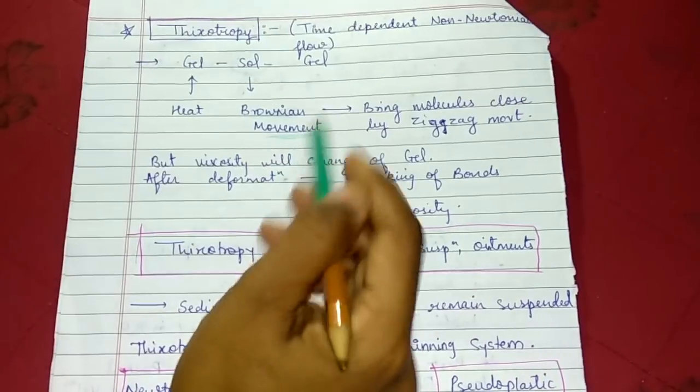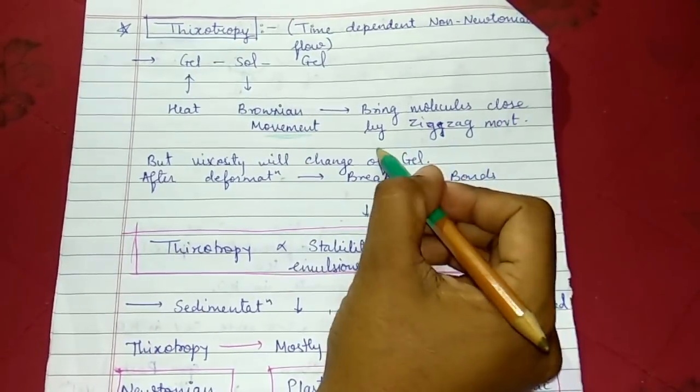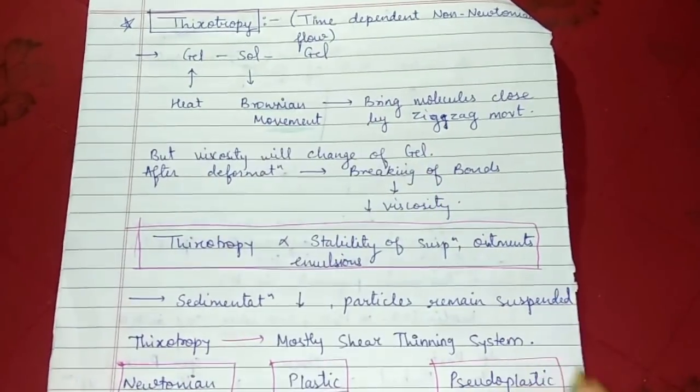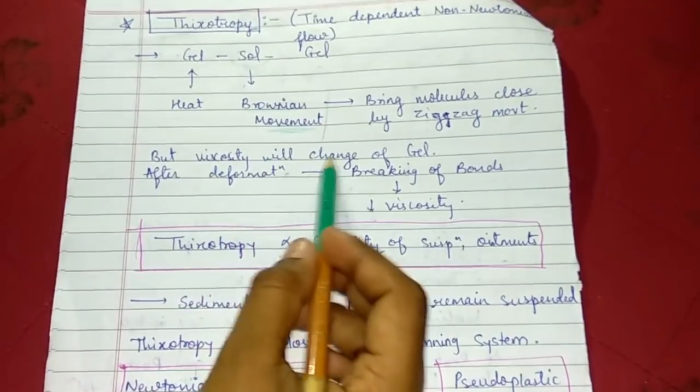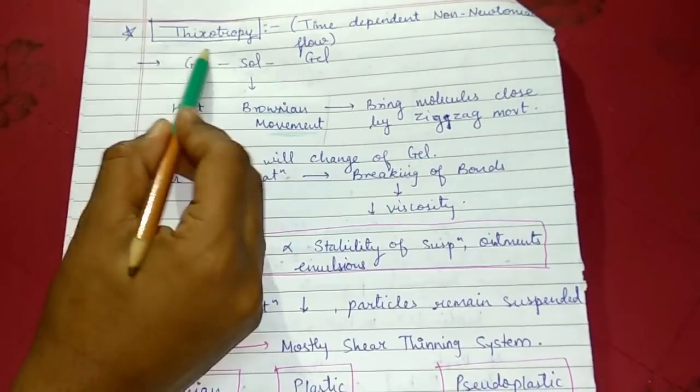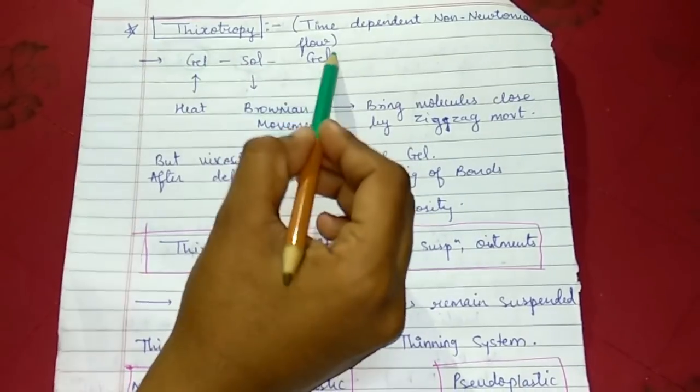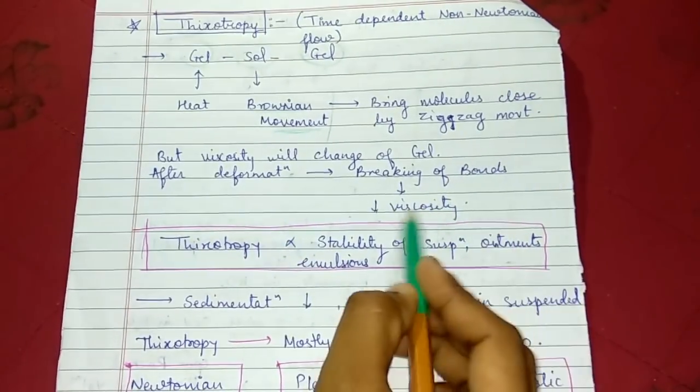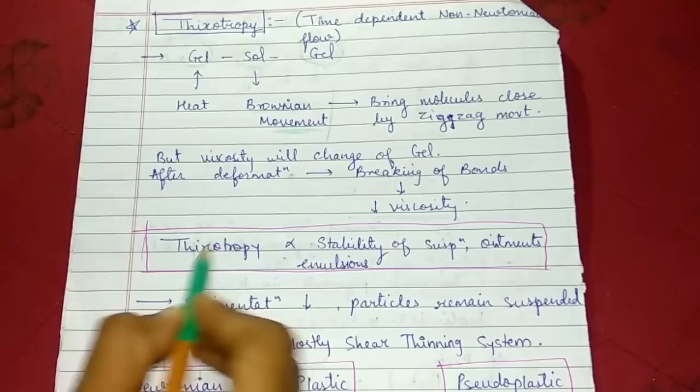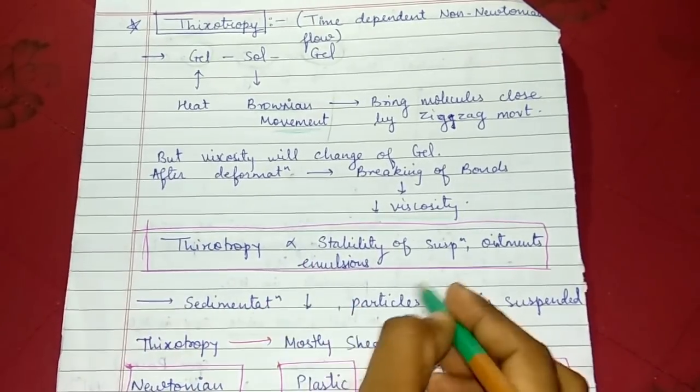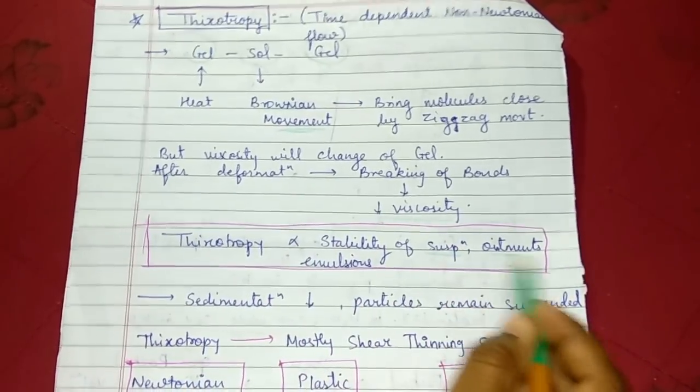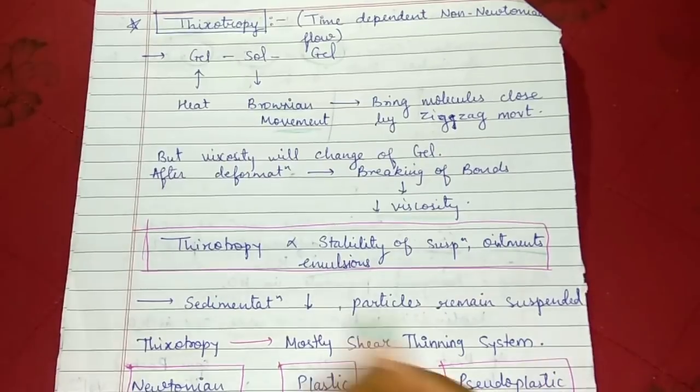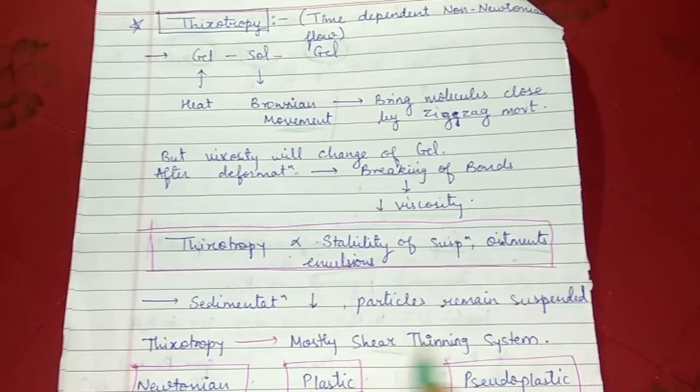Brownian movement means the molecules are brought close to each other by zigzag movement. Brownian movement is also known as pedasis. But viscosity will change of gel. The gel which was initial will have different viscosity when the gel is finally made. After deformation, breaking of bonds leads to decrease in viscosity. Thixotropy is directly proportional to stability of suspensions, ointments, and emulsions. Sedimentation rate will decrease when particles remain suspended. Thixotropy mostly is used for shear thinning systems.